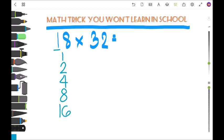Next, we multiply these numbers by 32. So 1 times 32 is 32.